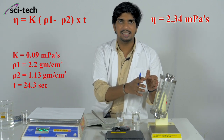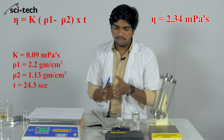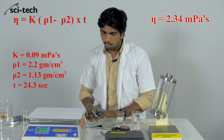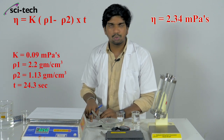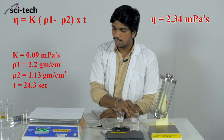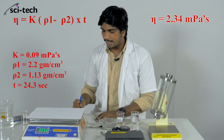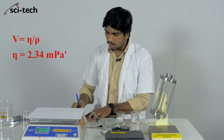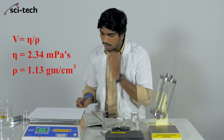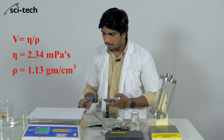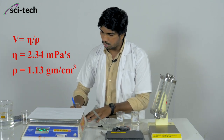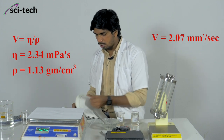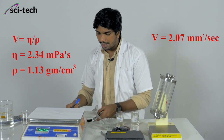At 30°C, for a 40% sugar solution made with 40 grams of sugar in 100 ml of water, using ball number 2 with a constant of 0.09 and density 2.2 g/cm³, we have calculated the dynamic viscosity to be 2.34 mPa·s. Now, kinematic viscosity equals dynamic viscosity divided by density of the solution: 2.34 ÷ 1.13 = approximately 2.07 mm²/s.